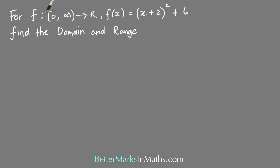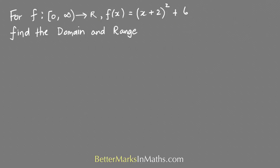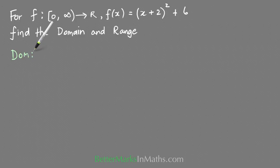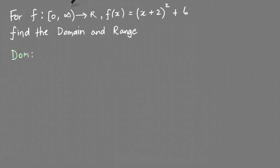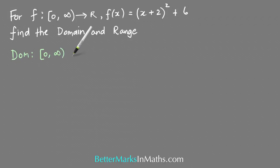In this question, f maps from 0 inclusive to infinity onto ℝ, where f(x) = (x + 2)² + 6. You have to find the domain and the range. The domain is already given in the question — whenever you have this notation, whatever appears in that position is always the domain. So the domain for this question is from zero inclusive to infinity.